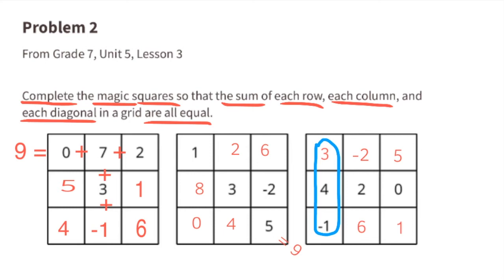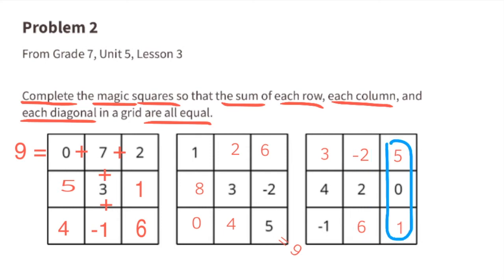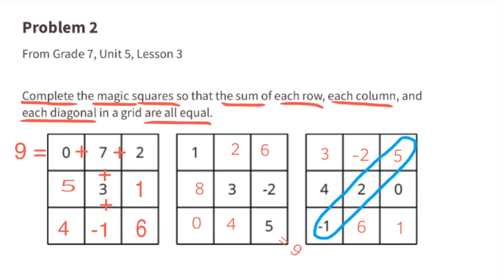Left-hand column: 3 plus 4 minus 1 equals 6. Middle column: 6 plus 2 minus 2 equals 6. Right-hand column: 1 plus 0 plus 5 equals 6. This diagonal: 3 plus 2 plus 1 equals 6. The other diagonal: 5 plus 2 minus 1 equals 6.